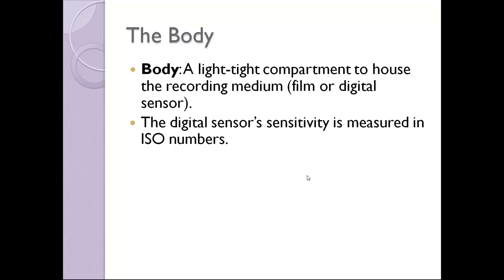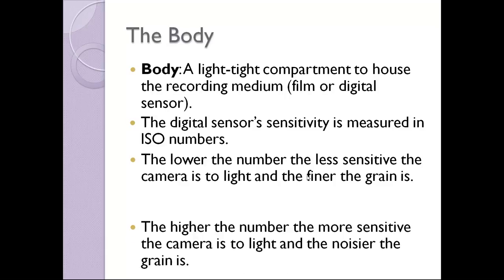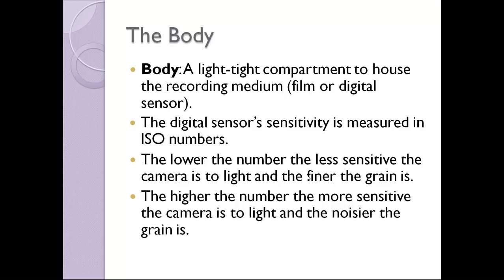A digital sensor's sensitivity is measured in ISO numbers. ISO stands for the International Organization for Standards. In this case, it relates to the standards for photography. The lower the number, the less sensitive the camera is to light, and the finer the grain is. The higher the number, the more sensitive the camera is to light, and the noisier the grain is.